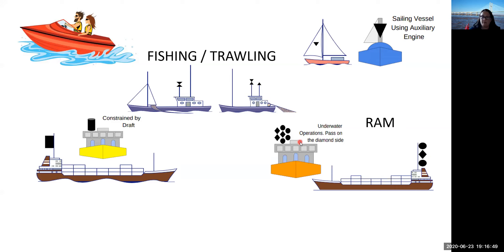A vessel conducting underwater operations gives you the good side and the bad side to pass. If it's doing underwater operations off its port side, it shows two balls on that side meaning stop, and two diamonds on the other side meaning go. So ball–diamond–ball, plus two balls and two diamonds — you pass on the diamond side. The skipper is saying 'I want you to pass me down this side of the vessel.'